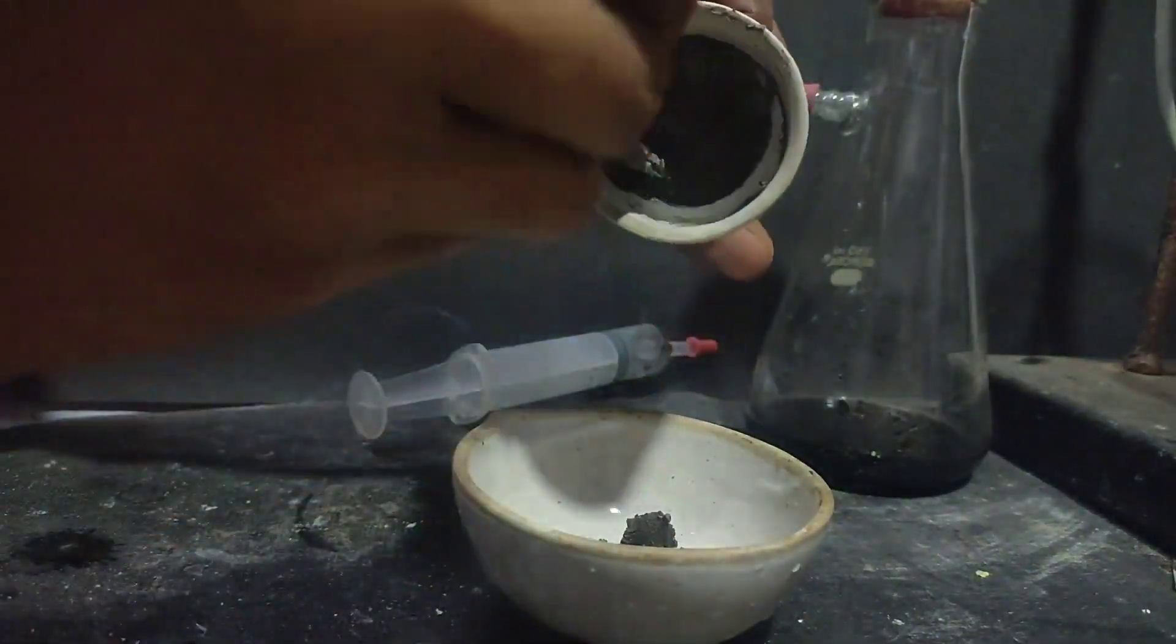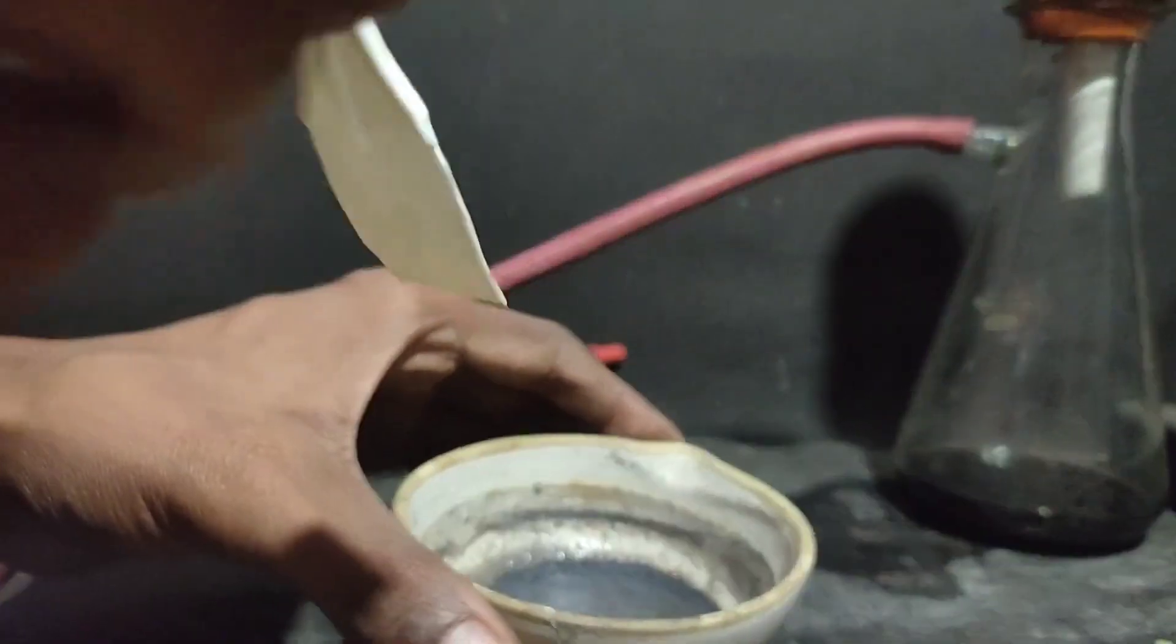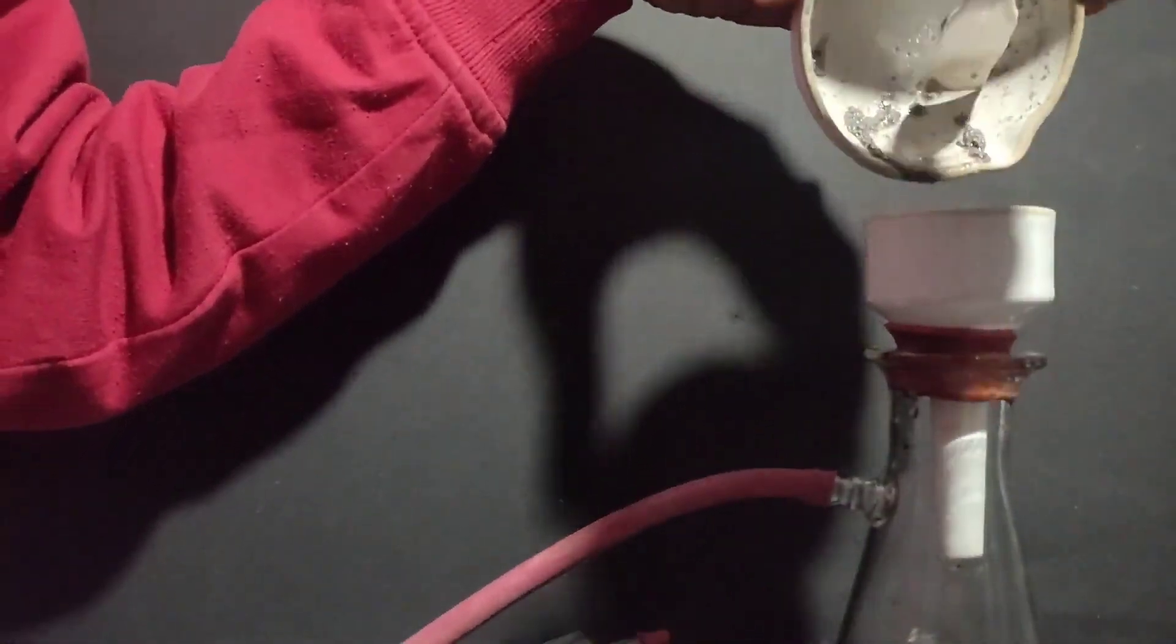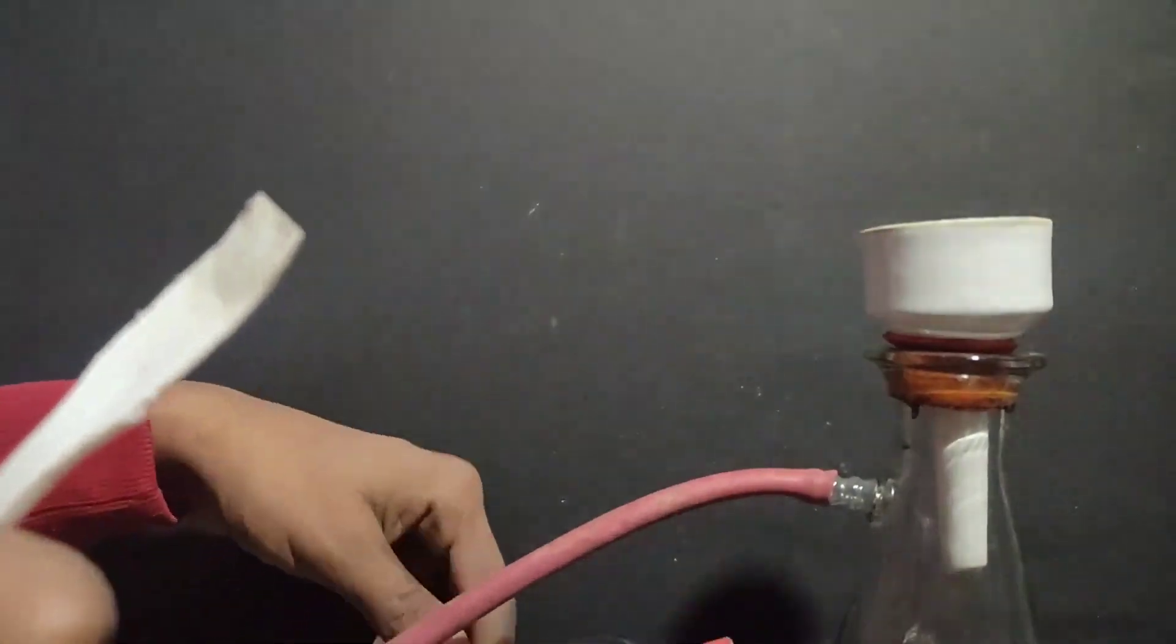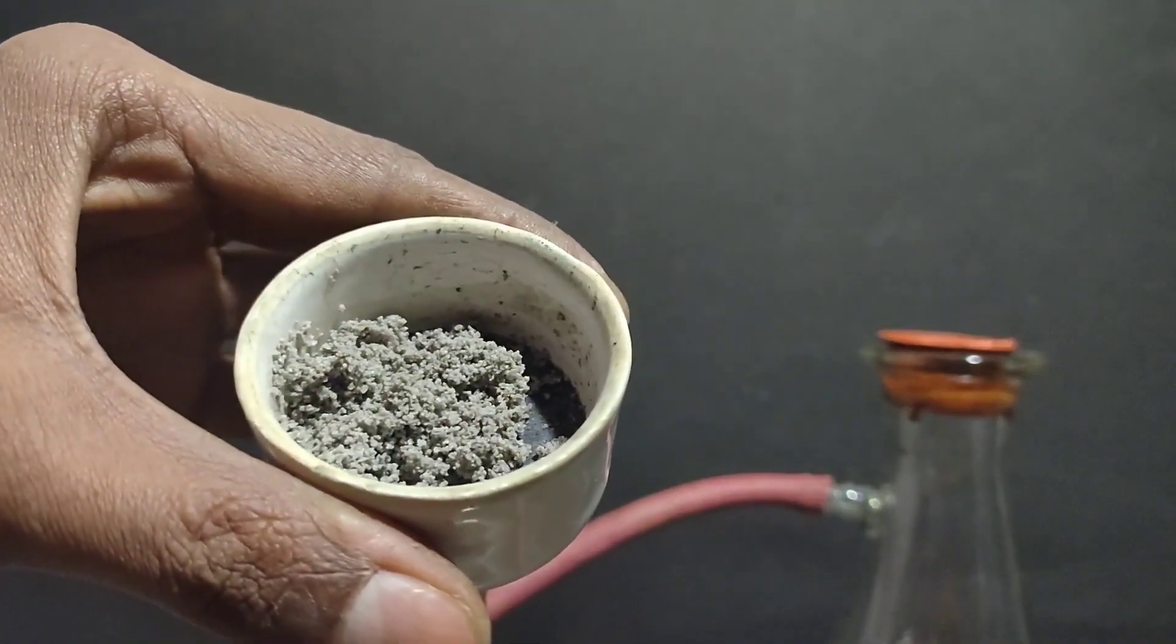Then I took the crystals in an evaporating dish and again recrystallized it from distilled water. This time the crystals were much better. I filtered them again with vacuum filtration and washed with cold distilled water. The crystals were still grey, but less than before.